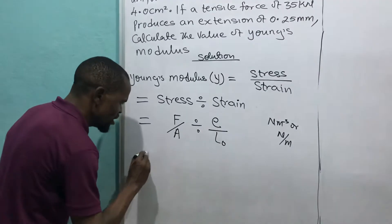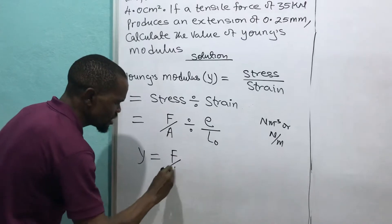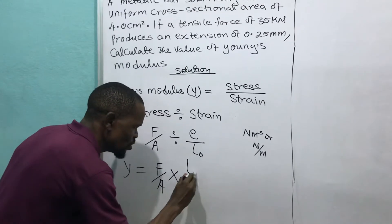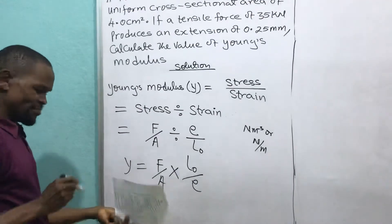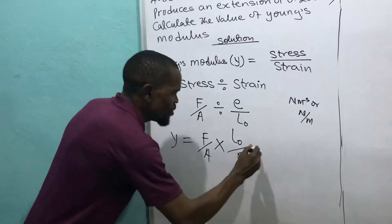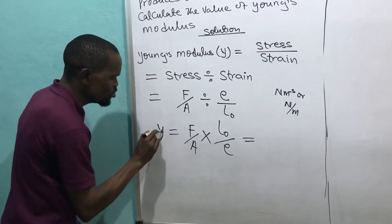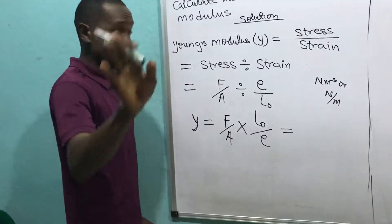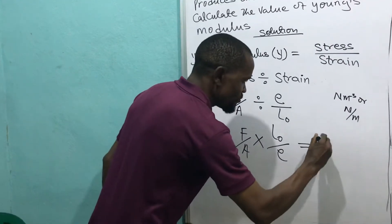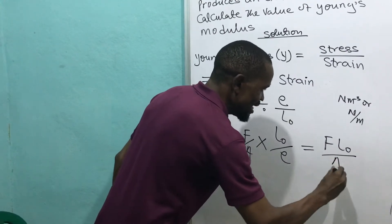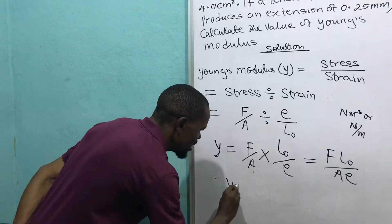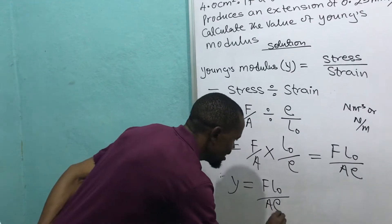Going back to the derivation, Young's modulus gives me F divided by (e over L₀), which rearranges so this inverts and multiplies. This gives me Young's modulus Y equals F times L₀ all over A times e, where L₀ is original length, A is area, and e is extension.